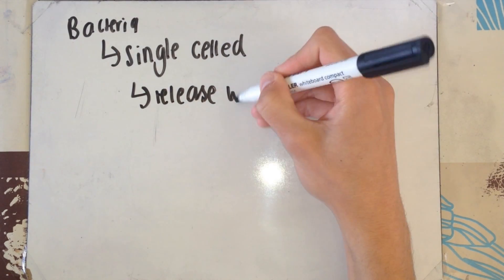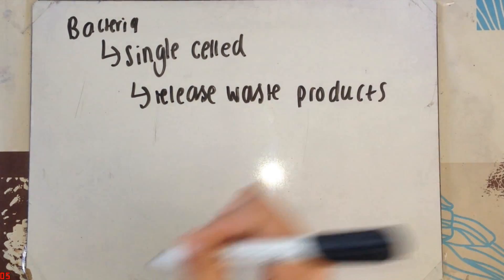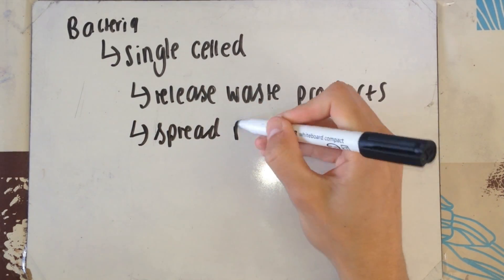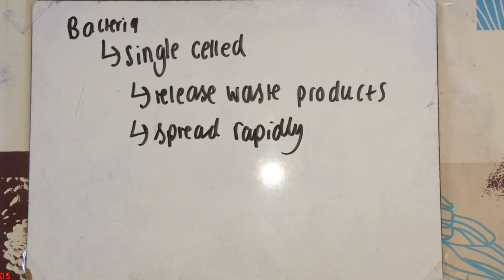Now, I'm going to list the organisms that cause disease and how they regularly do this. First of all, we have bacteria. These are single-celled organisms. They cause harm by releasing waste products and they're dangerous because they spread so rapidly.